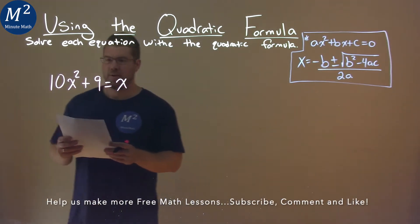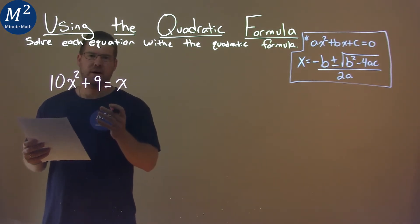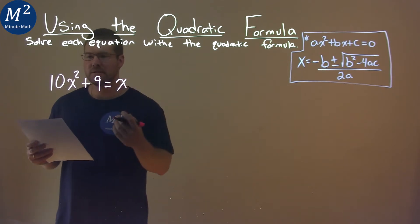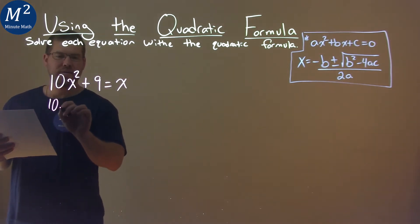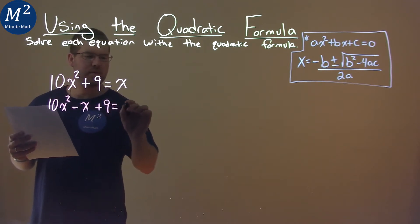First thing here is I want to take the x and bring it over to the left-hand side. I need this whole thing equal to 0. So we have 10x squared minus x plus 9 equals 0.